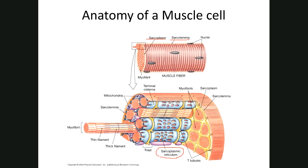The sarcoplasmic reticulum is the smooth ER of a muscle cell. Its key function is that calcium is stored in the sarcoplasmic reticulum. Now there are also structures called T-tubules — transverse tubules — that go from one side of the cell to the other.